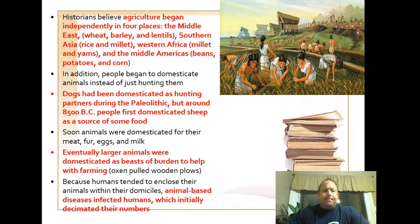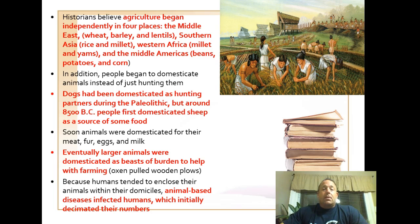The domestication of animals begins with the dog, then moves to sheep, pigs, chickens, and then larger animals like oxen and horses. These larger animals are referred to as beasts of burden because they could serve as pack animals that helped with trade and commerce. They also used these animals to pull plows, which boosted agricultural productivity.